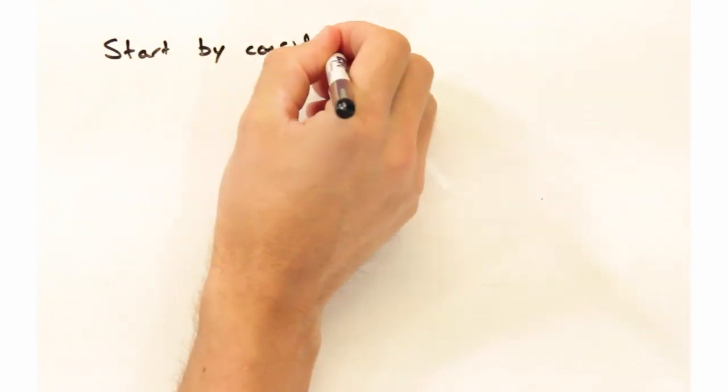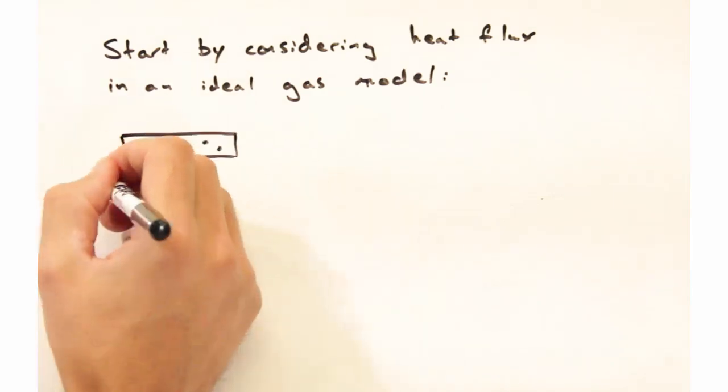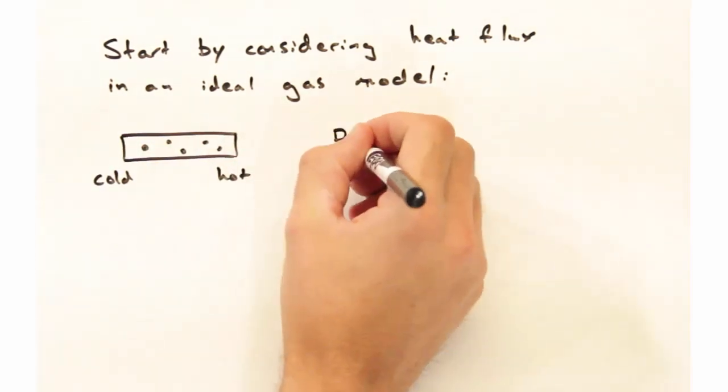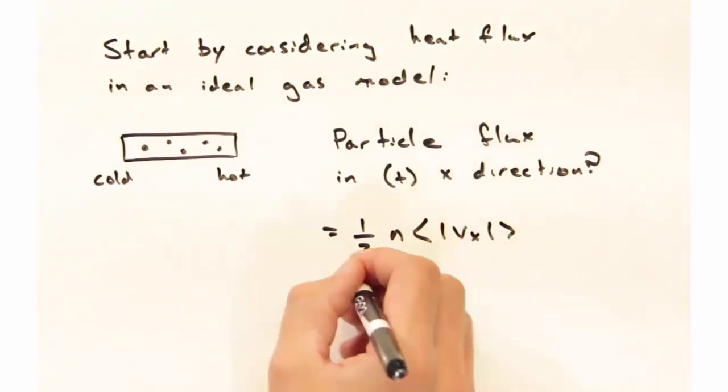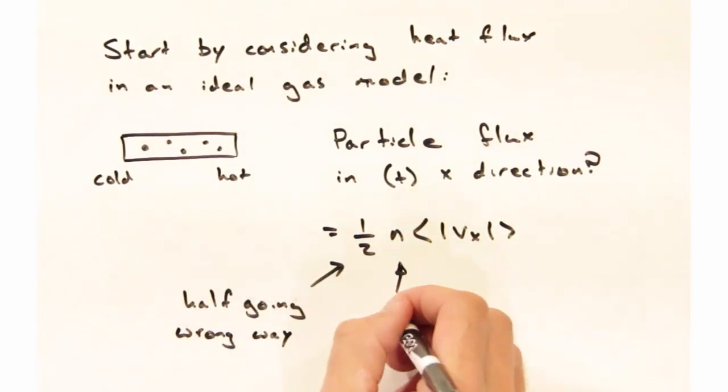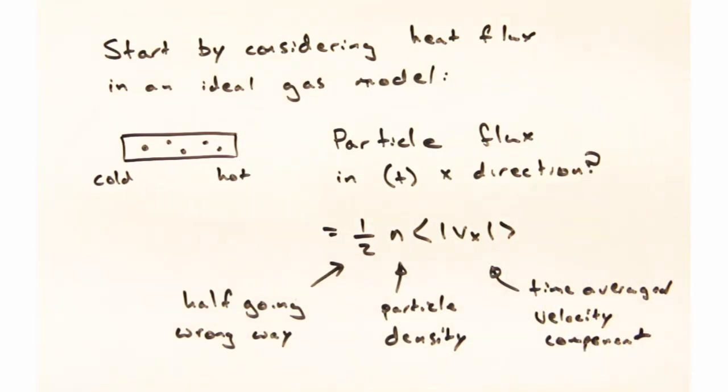With Fourier's law in mind, we're going to start by considering the heat flux using an ideal gas model. We're going to have particles in some sort of tube, and there's going to be a hot side and a cold side, and we're going to be thinking about the particle fluxes in this tube. If I think about the flux in the positive x direction, that's going to be related to the velocity of those particles in the x direction, as well as the number density of particles. However, half are going to be going the wrong way, so we have this half term up front.